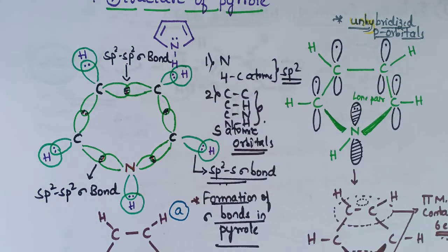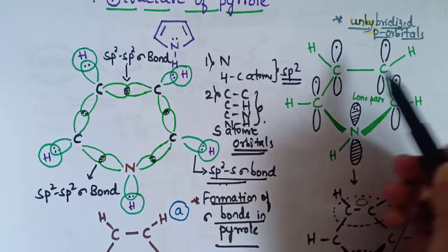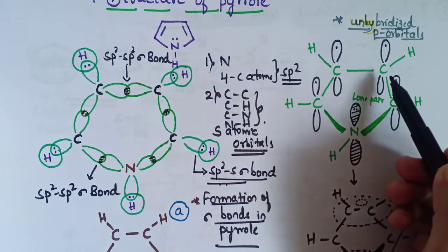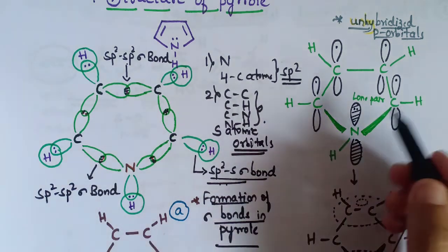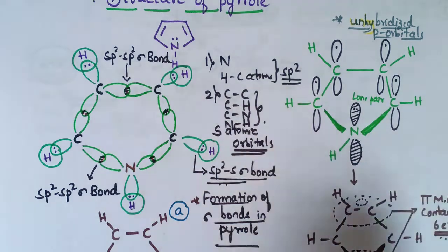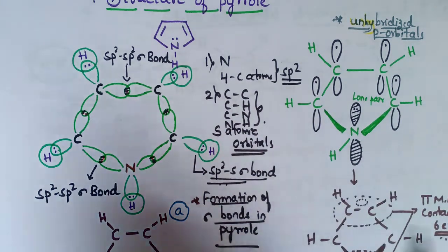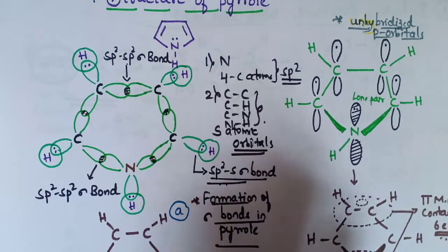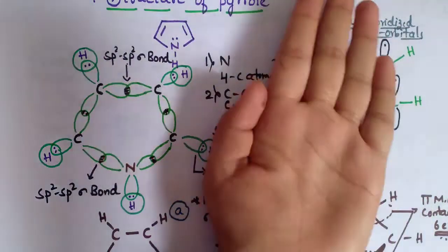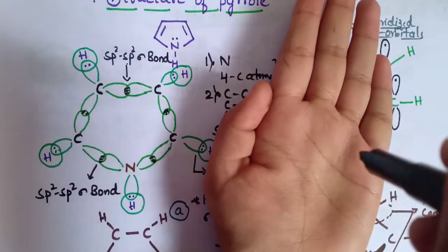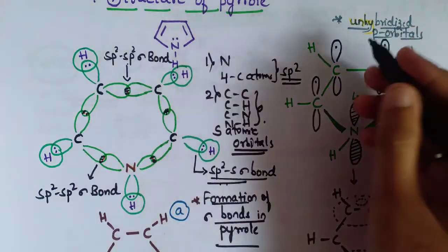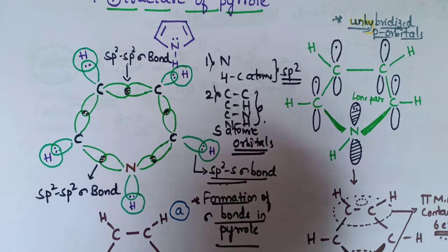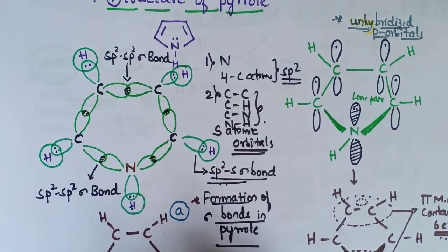You can see that each carbon atom has unhybridized p orbitals, and the nitrogen also has unhybridized p orbitals. These p orbitals are perpendicular to the plane of the sigma bonds — they are oriented like this, perpendicular to the sigma bond plane.